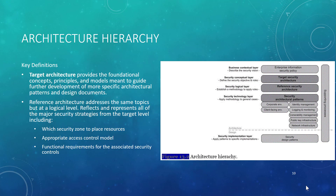Welcome back. This is the second of six videos looking at chapter 13 from Wheeler's most excellent textbook on security risk management. What we're going to be doing during this particular video is looking at this idea of an architectural hierarchy — the idea of linking together, through a supporting series of documents in increasing detail, the architecture of the entire organization.